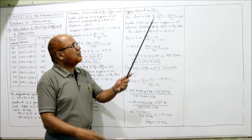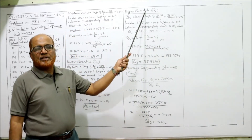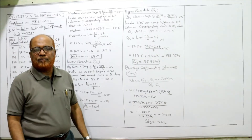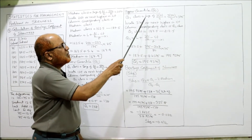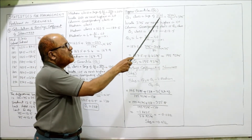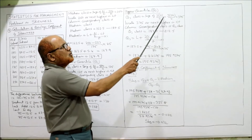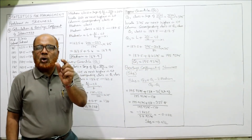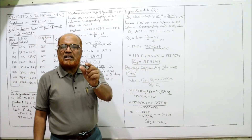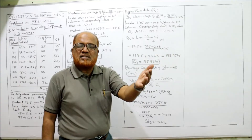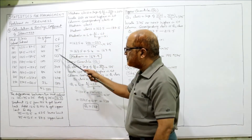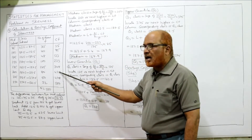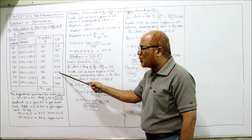For Q3, use 3n/4: 3 × 500 / 4 = 375. Locate 375 or the next higher value in the CF column. The next higher value is 428.